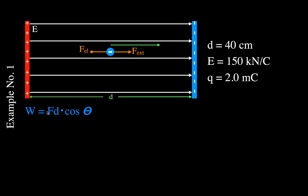The work equation says that work is equal to force times distance times the cosine of theta. We don't know the force directly, but the electric field equation tells us E equals F divided by charge, so we rearrange to get F = qE. Substituting that in, the work done on the charge is W = qEd·cos(θ).